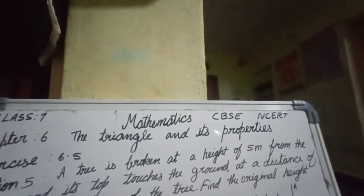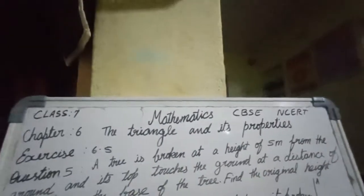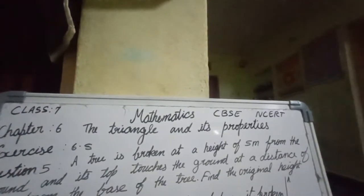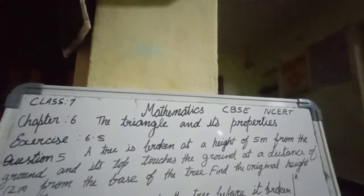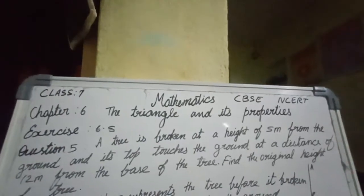A tree is broken at height of 5 meter from the ground and its top touches the ground at a distance 12 meter from the base of the tree. Find its original height.